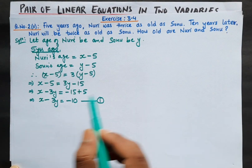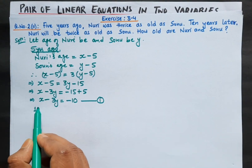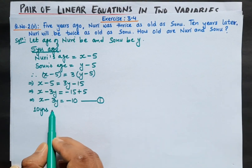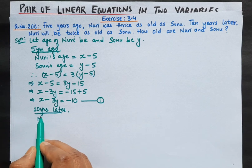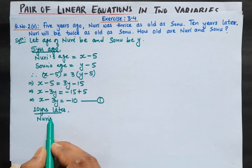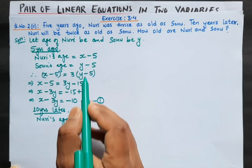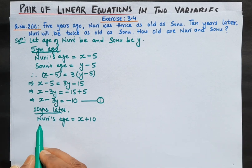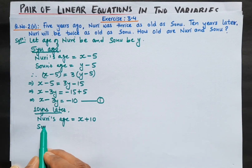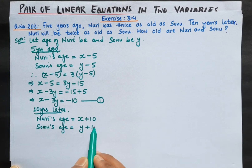Now let's look at case number 2. After 10 years, we need to find the ages of both Nuri and Sonu. Ten years later, Nuri's age will be x plus 10, and similarly, 10 years later Sonu's age will be y plus 10.